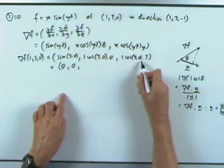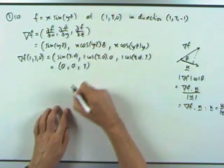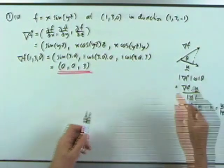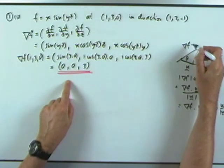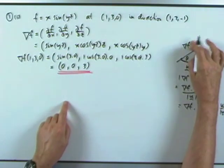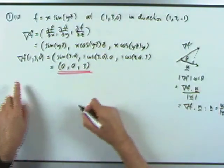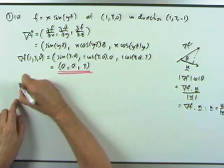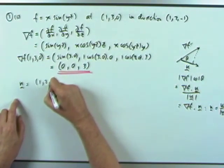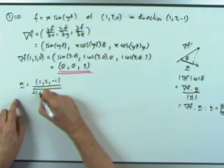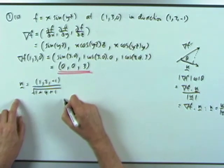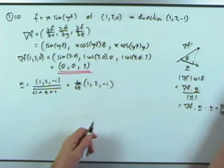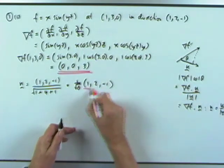So the components of grad f at the point (1,3,0) are (0, 0, 3). Now for the unit vector n: that's (1, 2, -1) divided by its length, which is the square root of 1 plus 4 plus 1, so 1 over root 6 times (1, 2, -1). The directional derivative - partial f by partial n - is grad f at (1,3,0) dot the unit vector. Feeding in the numbers: 1 over root 6 times (0 + 0 - 3), giving negative 3 over root 6.